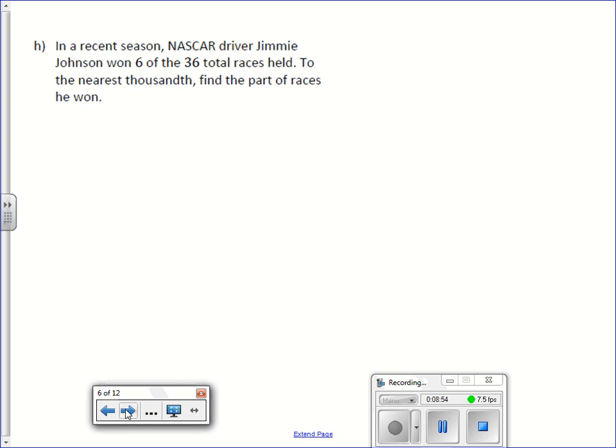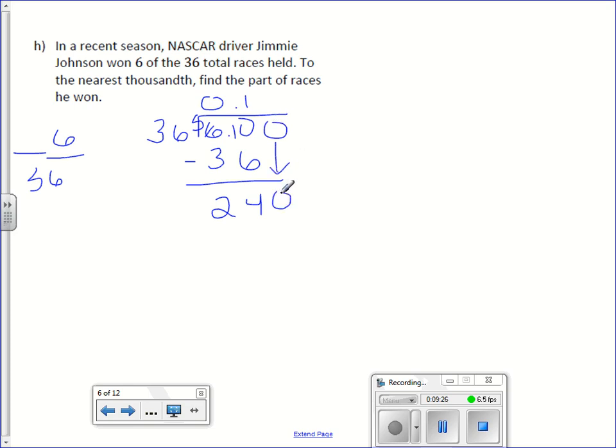In a recent season, NASCAR driver Jimmy Johnson won 6 out of the 36 races held. To the nearest thousandth, find the part of the races he won. So our fraction is 6 out of 36. So 36 into 6, 0 times. 36 into 60 once. Do some borrowing. 24. Bring down the 0. My guess is about 6 times.